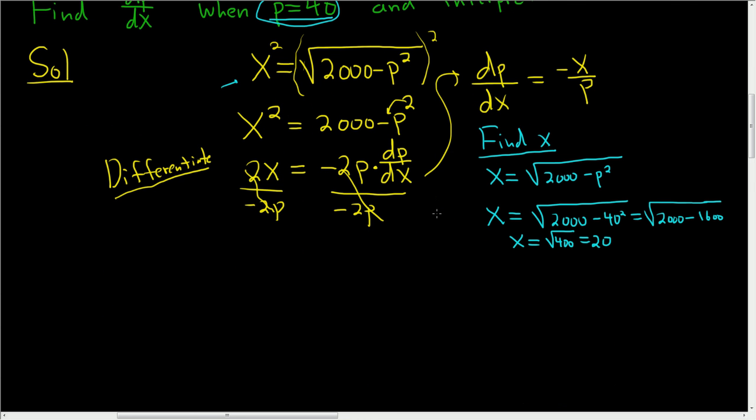So to finish, we have dp/dx is equal to negative x over p. And we know that when p is 40, x is 20.